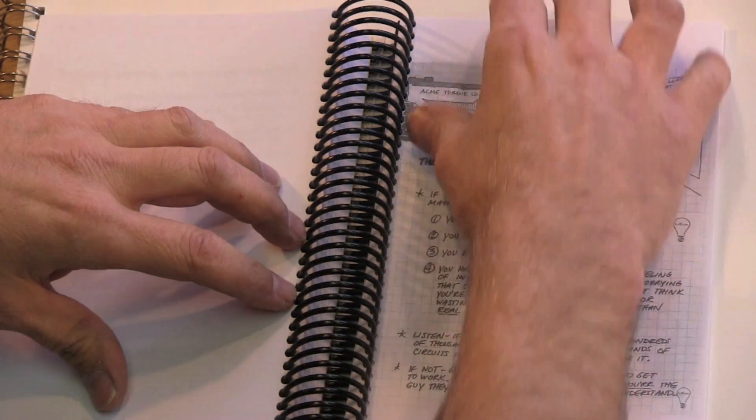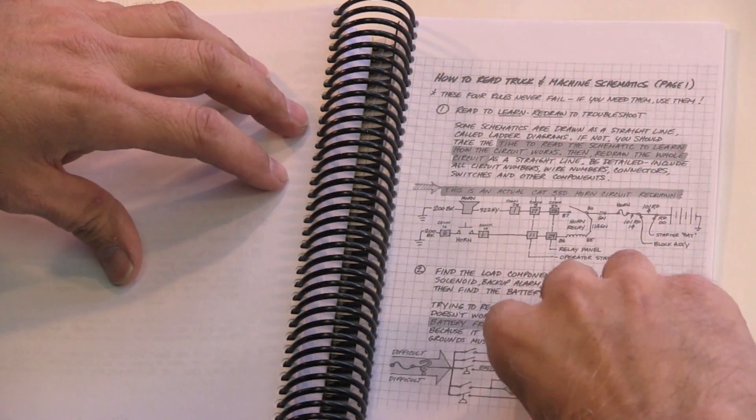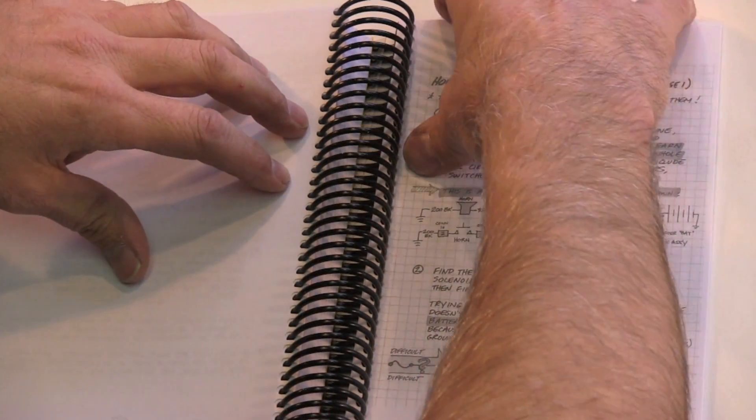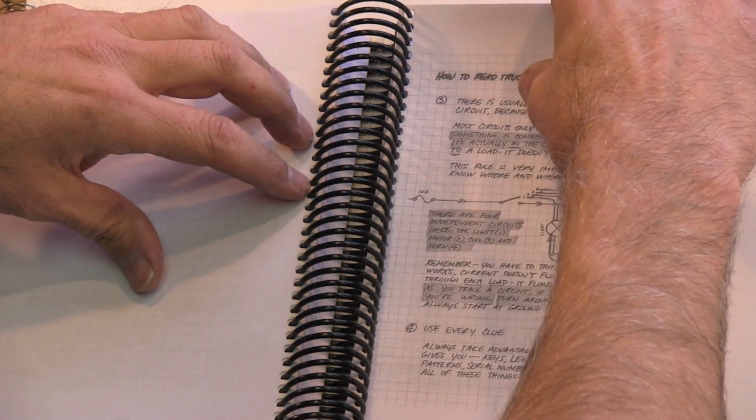And the book gives you the four rules to schematic reading, there's four rules and if you understand those four rules then you're going to be able to read schematics a lot better and you're going to be able to diagnose a lot quicker.